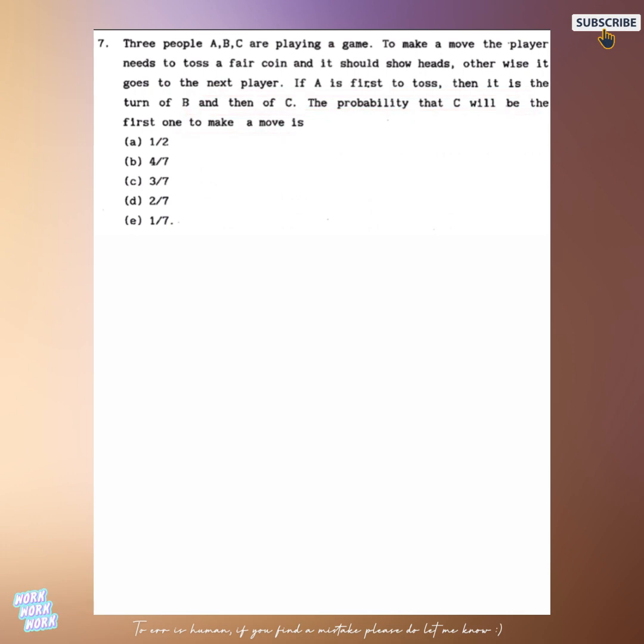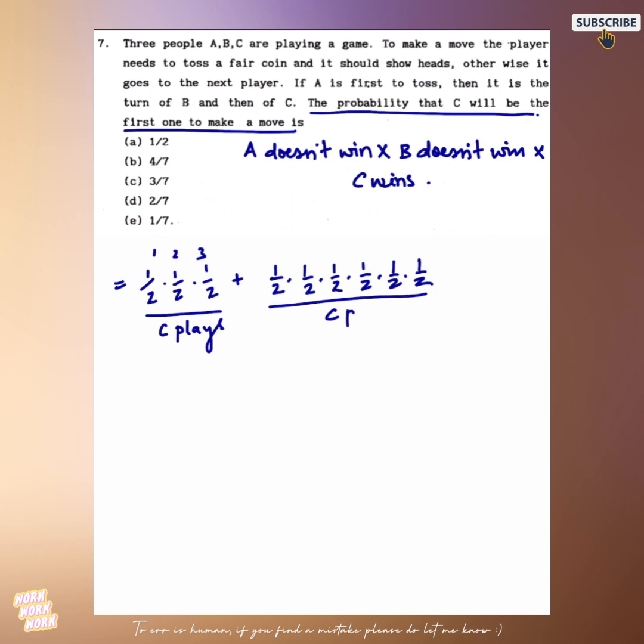In the next question we have been given 3 people who are playing a game, and to make a move one has to get a head, otherwise it will go to the next player. And we have to find the probability that C will be the first one to make a move. This can happen in the following way: A doesn't win, B doesn't win and C wins. Here if C also doesn't win then we can have another trial where A doesn't win, B doesn't win, C doesn't win, A doesn't win, B doesn't win, C wins. So similarly we will get a GP.